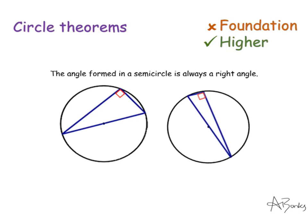This is the most basic circle theorem: the angle formed in a semicircle is always a right angle. Here I have a semicircle because this is a diameter of the circle, and any angle formed in here that touches the circumference will be a right angle. They can look like this as well — any diameter and any angle inside it is always a right angle.